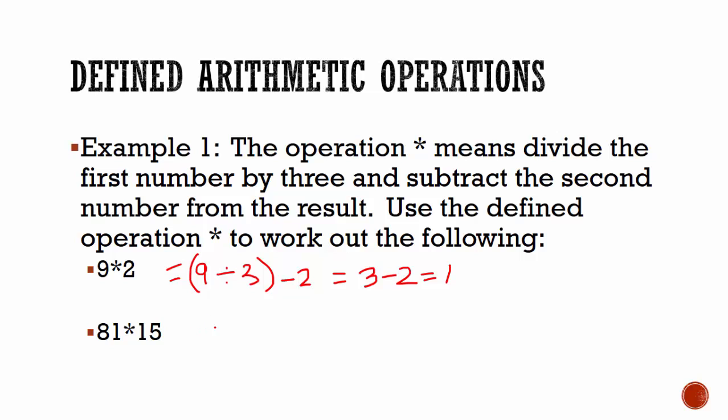The second one, we have 81 asterisk 15. 81 divided by 3 minus 15. 81 divided by 3: 3 into 8 is 2, with 2 remainder. 3 into 21 is 7. So we get 27 minus 15. 27 minus 15 is equal to 12.